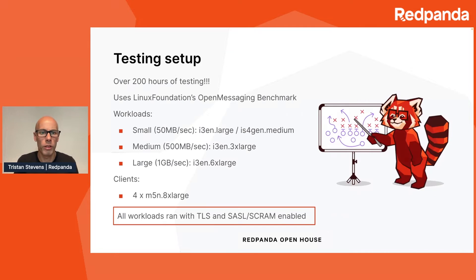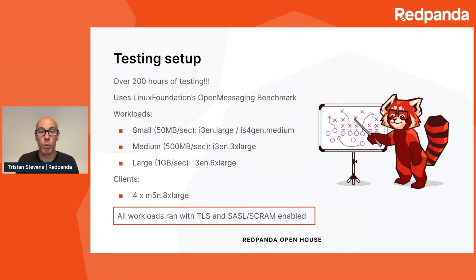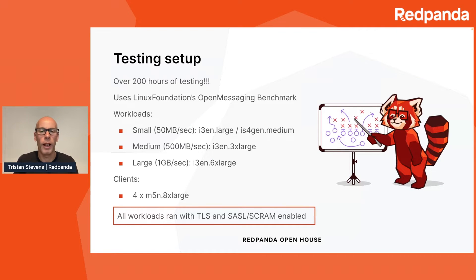So how do we go about testing all of this? Our testing setup is based on the Linux Foundation's open messaging benchmark. The Linux Foundation has a project called open messaging, set up to produce design patterns and templates for how to use messaging systems, and its suite of benchmarks covers a whole load of different configurations for Kafka and various other messaging systems. We've run over 200 hours of tests to get to these results, testing various different configurations to make sure we're presenting both Redpanda and Kafka in the best light and comparably, like for like.